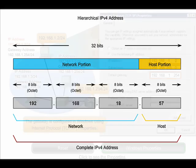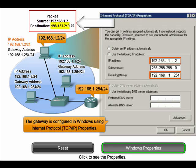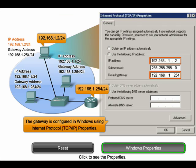If the network portion of the destination address of the packet is different from the network of the originating host, the packet has to be routed outside the original network. In order to leave the original network, the packet is sent to a gateway, also sometimes called a default gateway. This gateway is a router interface connected to the local router. The gateway interface has a network layer address that matches the network addresses of all the hosts in that network. The hosts are configured to recognize that as the gateway address and use it anytime they need to send packets outside of the local network.